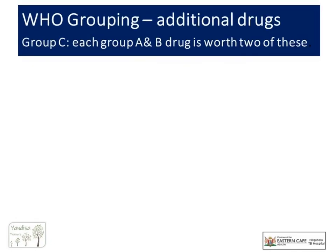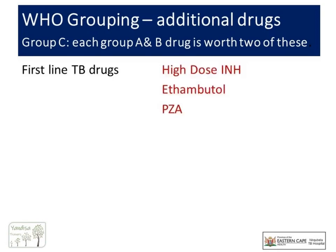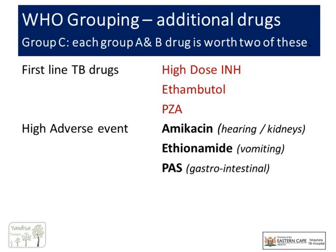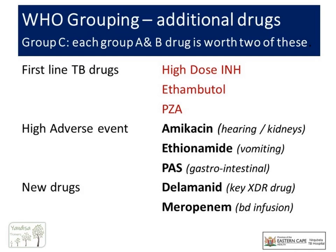And lastly are our Group C drugs — these are the Tatas and are usually used to augment a regimen, or used when some of our Group A or B drugs are not tolerated. They include the well-known first-line TB drugs: INH but used at a high dose, ethambutol, and PZA. Also included are useful but quite toxic drugs — for example, amikacin, which has a high risk of hearing loss and kidney damage, and ethionamide and PAS, known for their gastric side effects. Group C also includes two powerful newer drugs: Delamanid, an expensive drug used in XDR patients and rescue regimens, and Meropenem, a drug that needs to be given IV twice daily for six months and is only found in specialized centers.